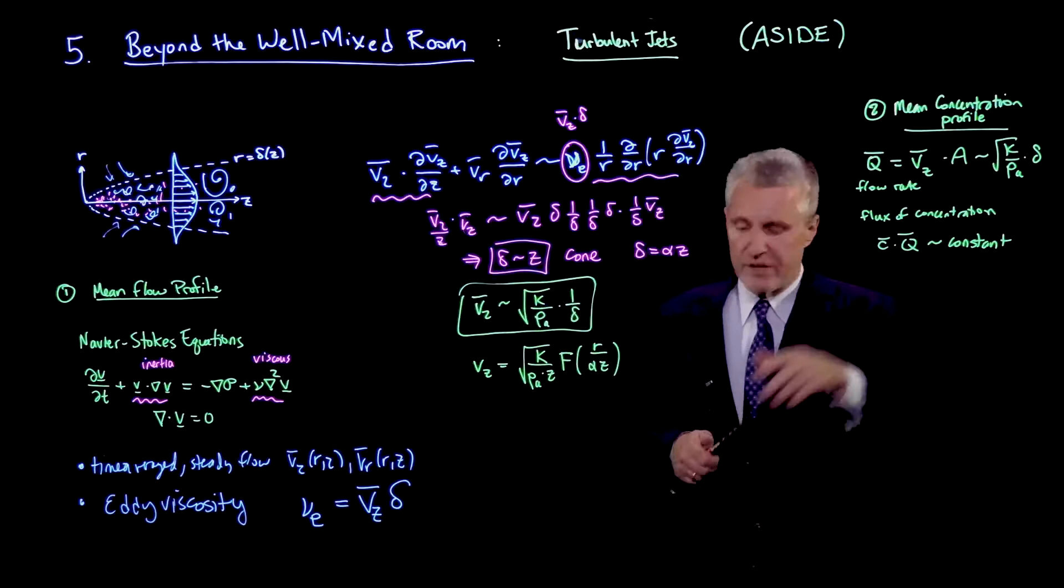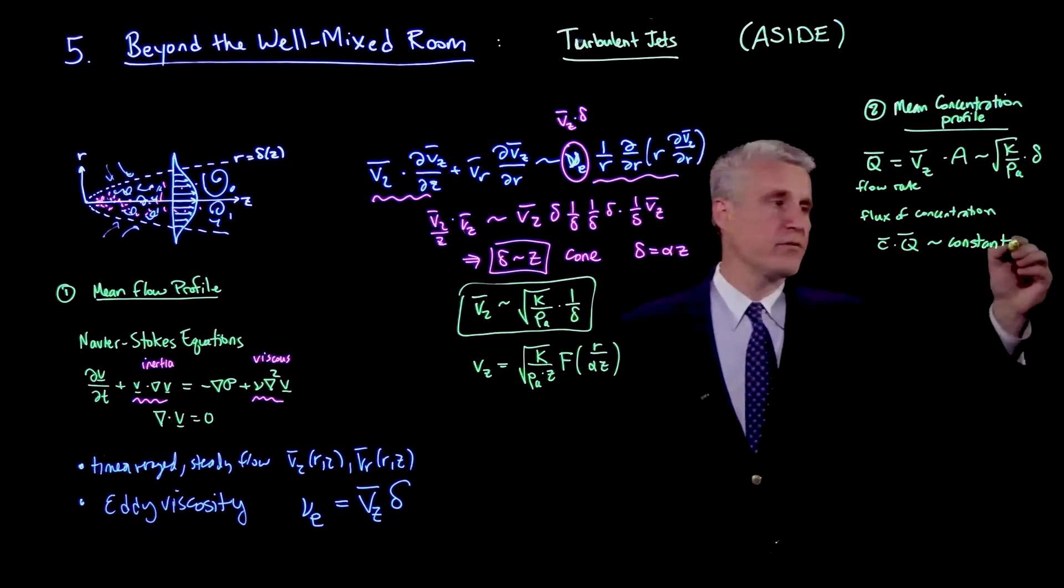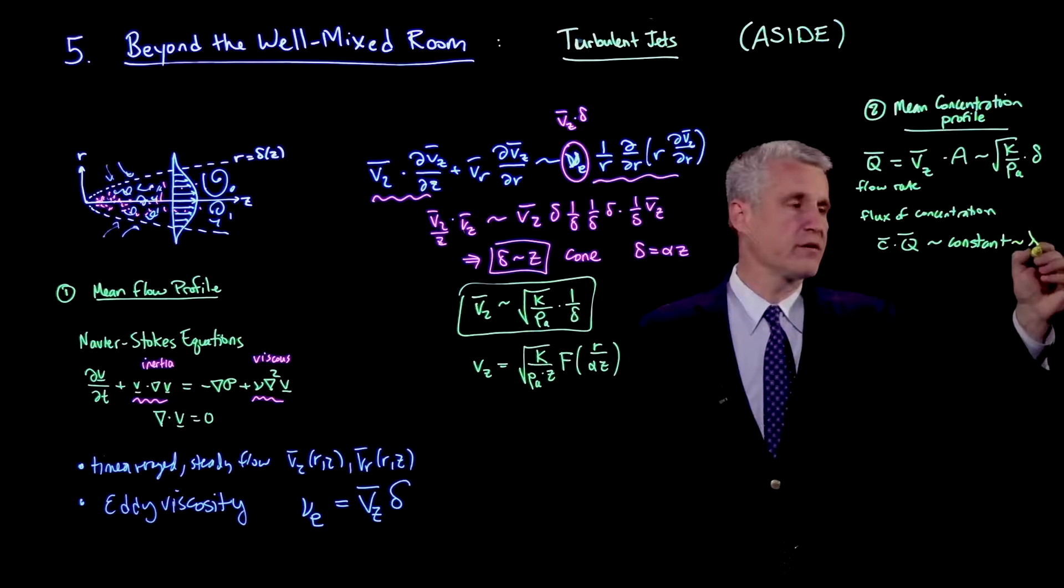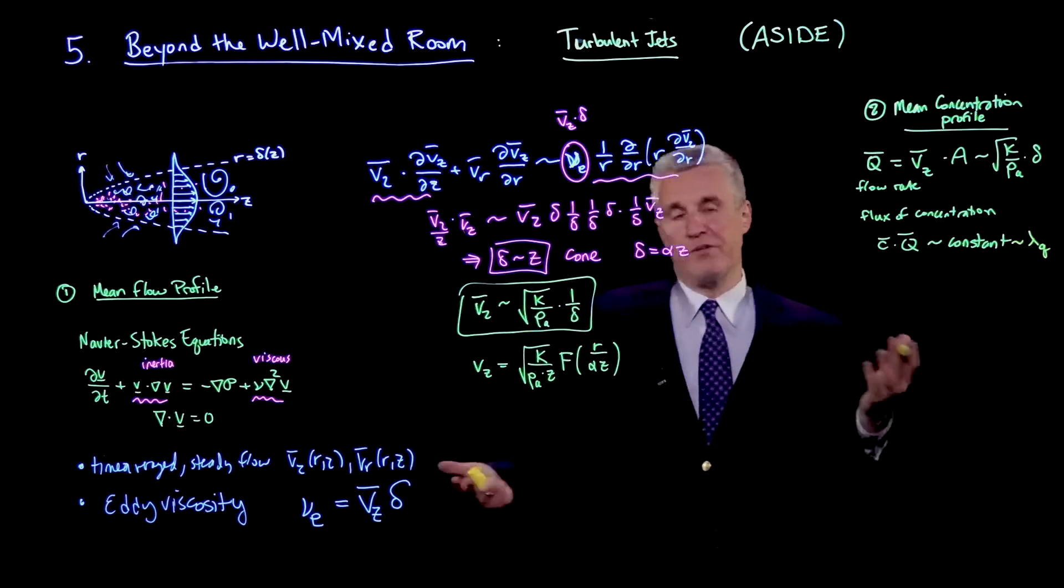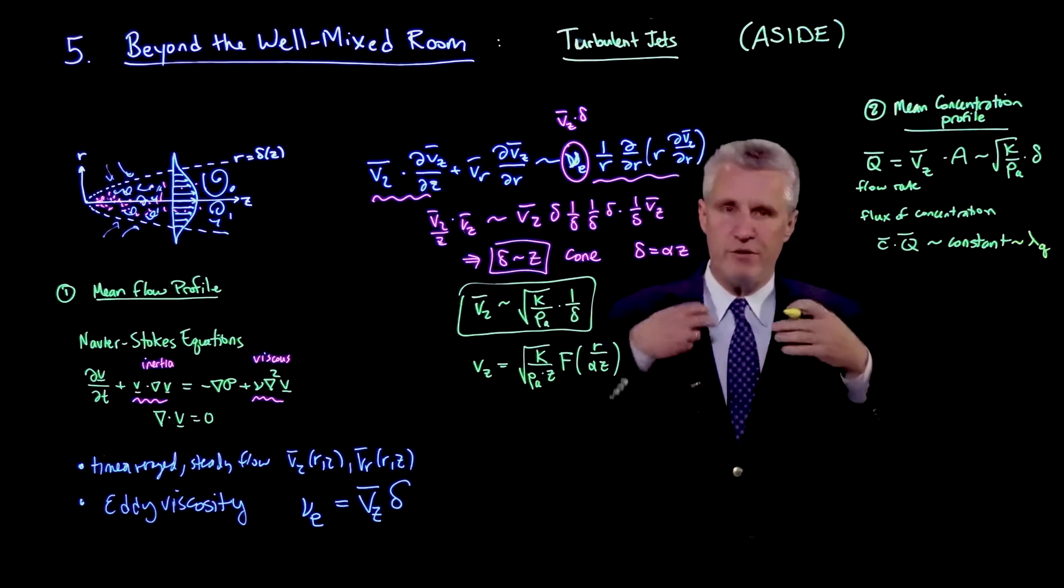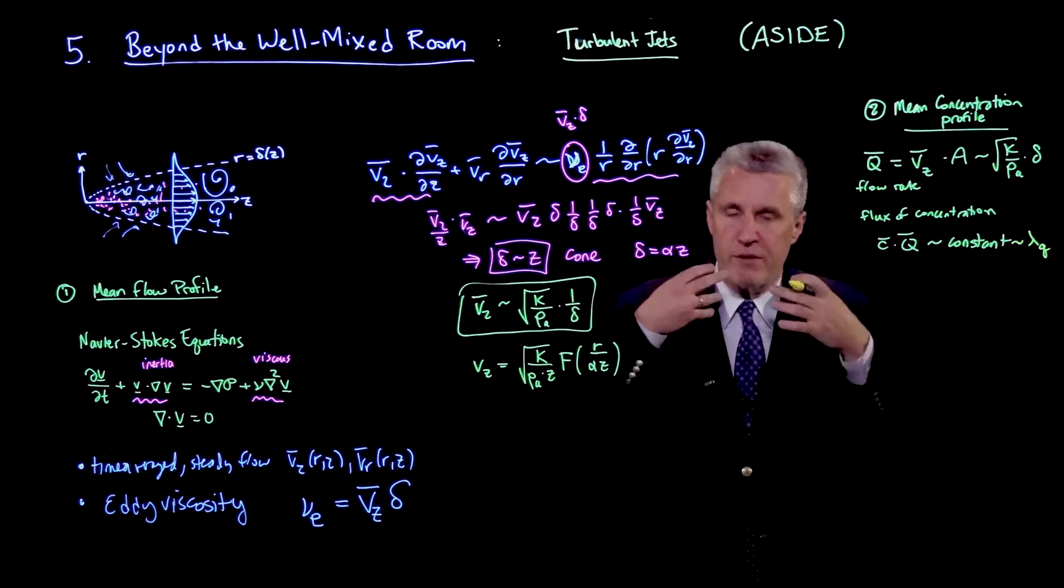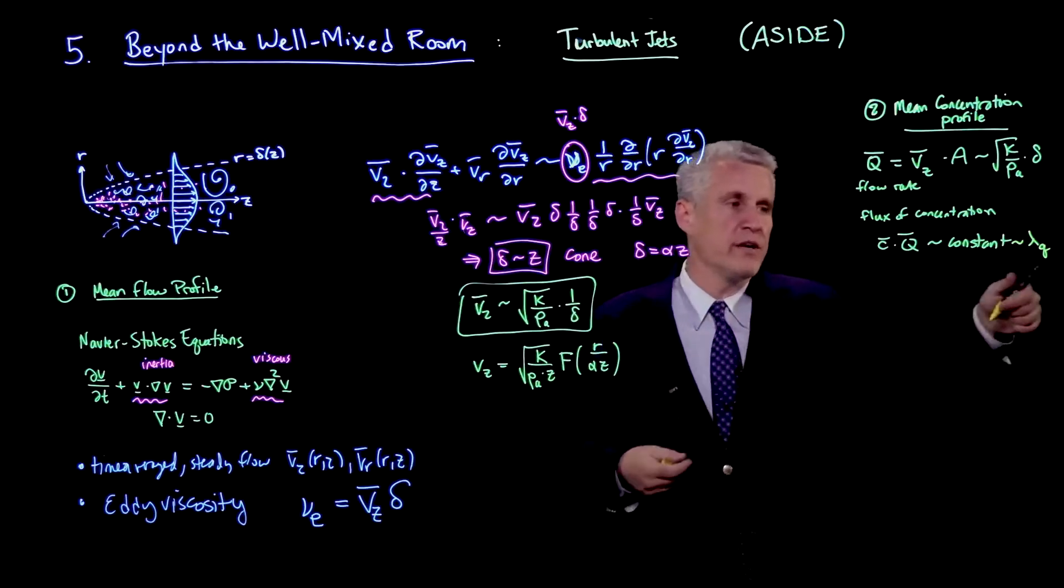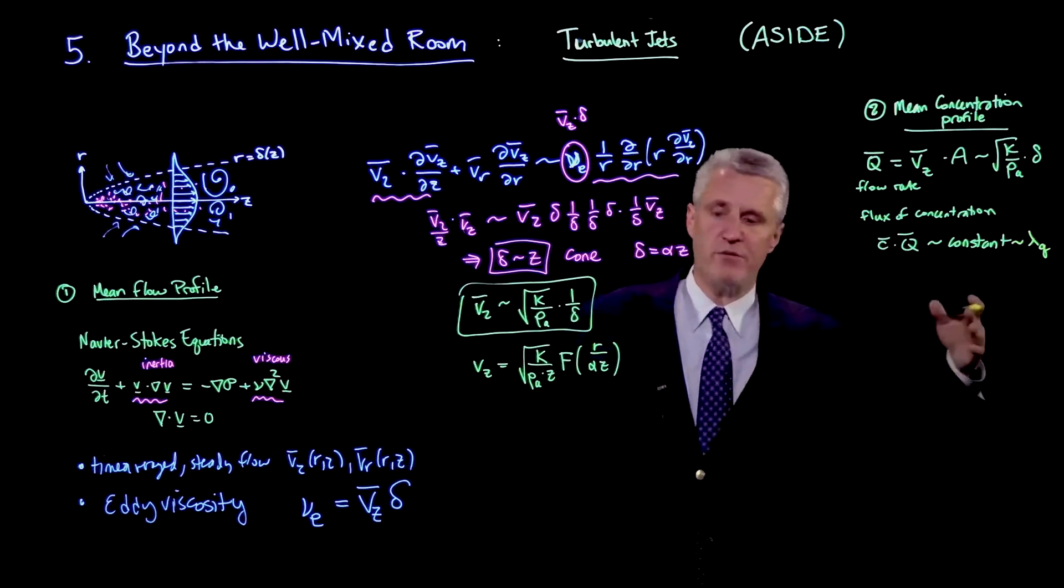And so if that's the case, then we can, and in fact, this constant would be lambda q. If we're thinking of, for example, infection. If c is the concentration of infection quanta, then lambda q is the rate of emission of infection quanta from the mouth. We've already talked about that quantity. And this is now telling me how the concentration of infection quanta decays with time.